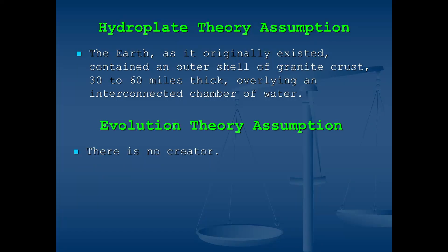Before someone complains that the hydroplate theory does not explain how the Earth came to be constructed as we have presumed, you need to consider what the starting assumption is for the theory of evolution: there is no creator. How does the evolutionist know that? There really isn't anything wrong with this starting assumption per se, except when this presumption is used as supposed evidence to prove this very same presumption.